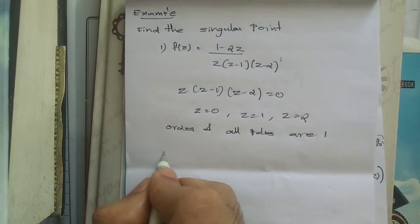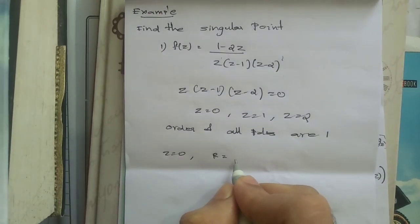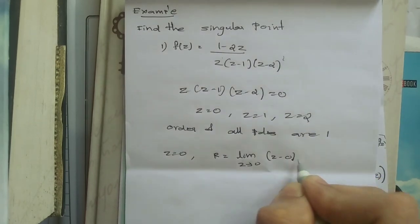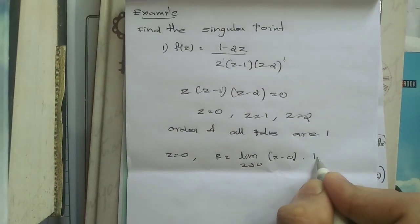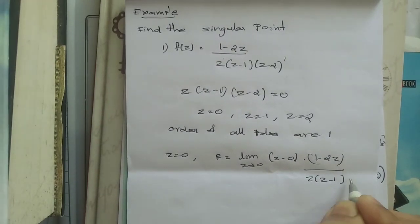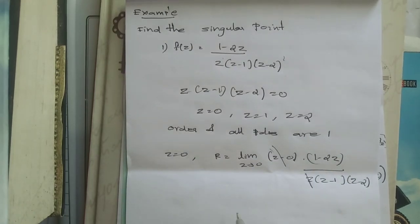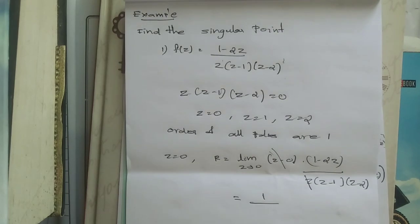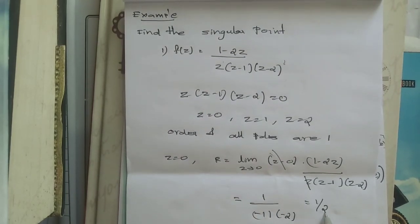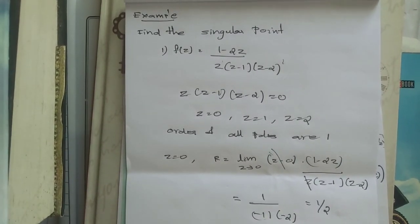For z = 0, the residue is R = limit as z → 0 of (z − 0) · f(z) = limit of z · (1 − 2z) / [z(z−1)(z−2)]. The z terms cancel, and substituting z = 0 gives 1 / [(−1)(−2)] = 1/2. So the residue at the singular point z = 0 is 1/2.